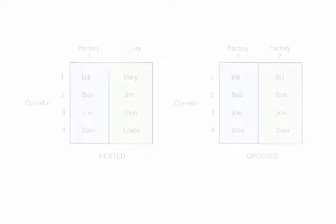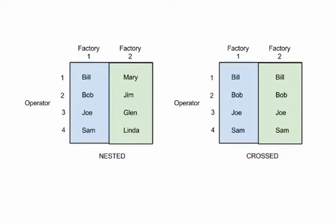A similar example would be if you have three or more operators testing a new procedure. They could be the same operators testing procedure one, or they could be a different set of operators. If procedure one is in one location, operator one, two, and three would not be the same as operator one, two, and three in another location — so there you would have a nested structure. If the same operators test the two procedures, then they would be crossed. Understanding how the experiment was conducted is needed to know whether two factors are crossed or nested.